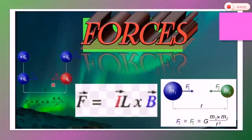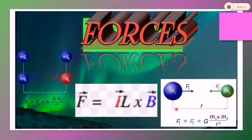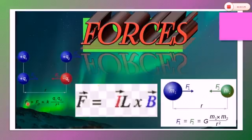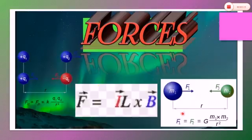Considering each force separately: gravitational force between two identical masses of 2 kg each, placed 1 meter apart, gives a force of 6.7 × 10⁻¹¹ Newton. Whereas the electric force between two charges of 1 coulomb each, also placed 1 meter apart, comes out to be 9 × 10⁹ Newton — far stronger than gravitational force. This means electric force is the strongest and gravity is the weakest.